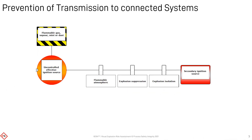Combustion products, e.g. burning embers, may become an ignition source to upstream or downstream systems if the explosion cannot be suppressed or isolated.